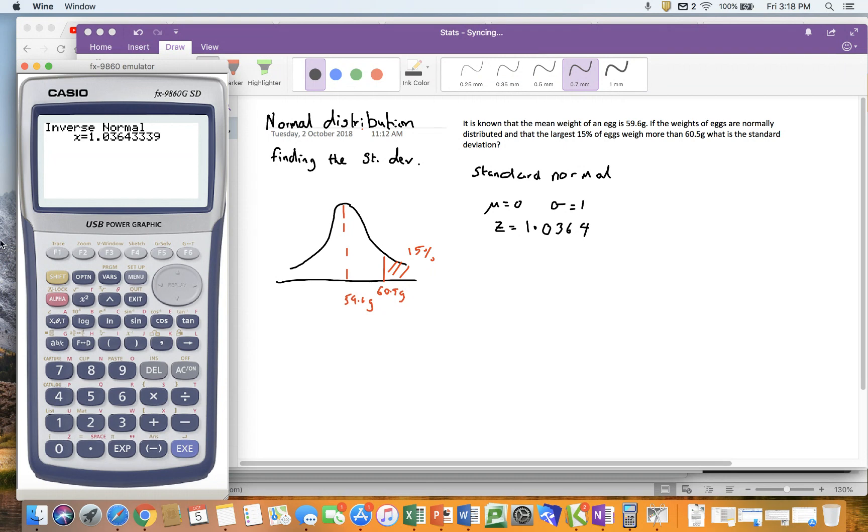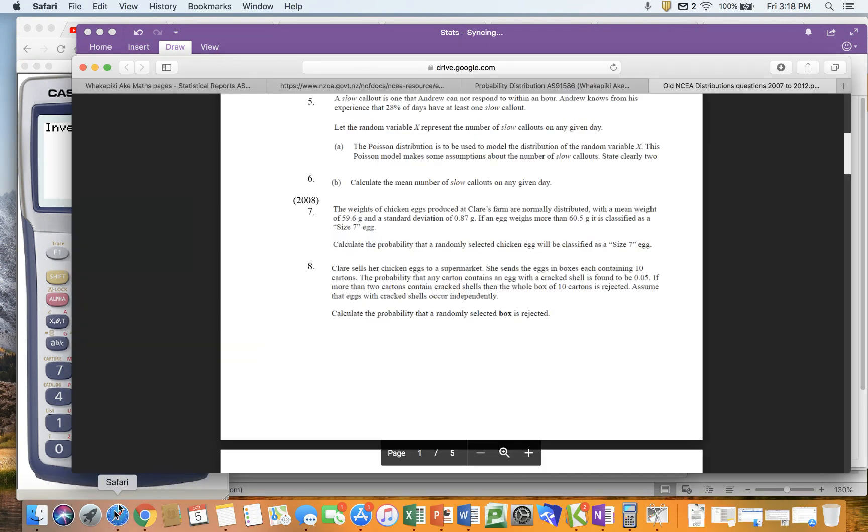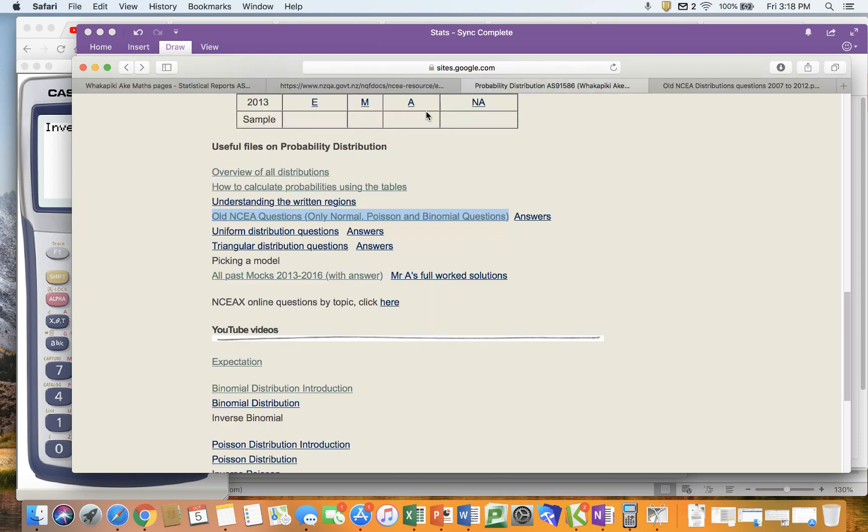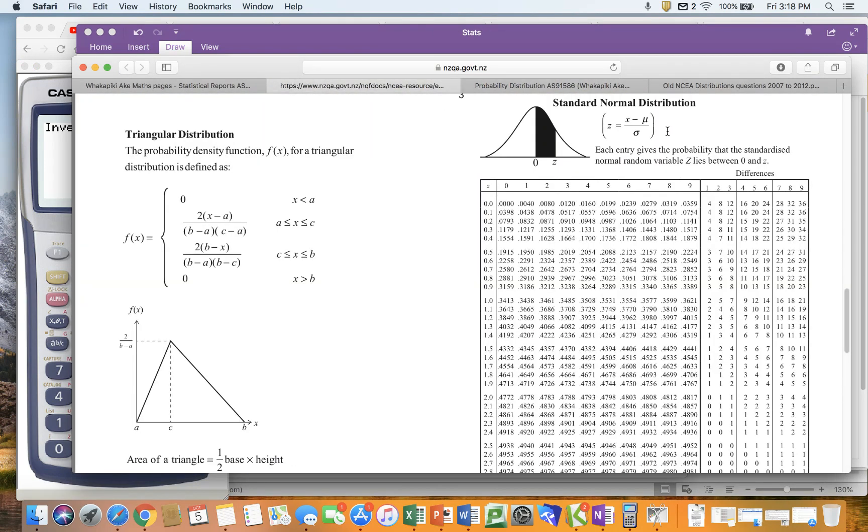Much the same as the last time, I go to my normal distribution, my stats tables. At the top there it's got my formula for converting from my value to my standard normal. I've got my z, I've got my x, I've got my mean. The only thing I don't have is my standard deviation, therefore I can work that out.